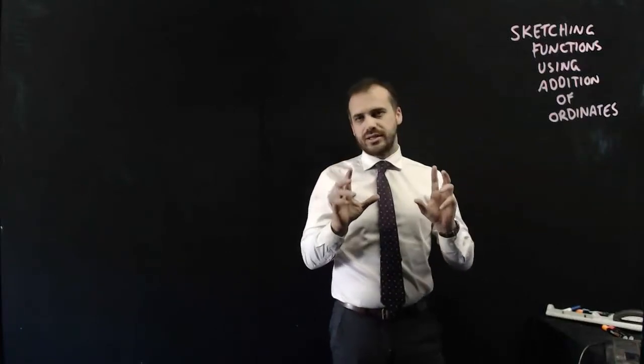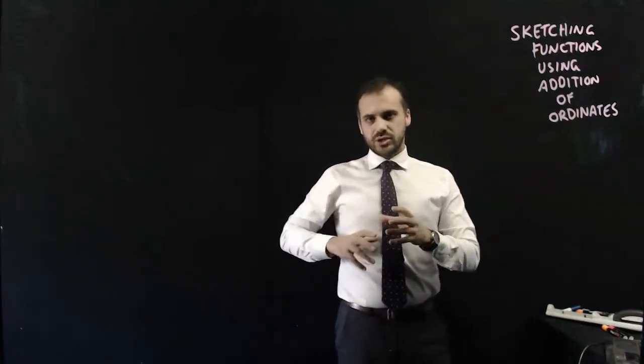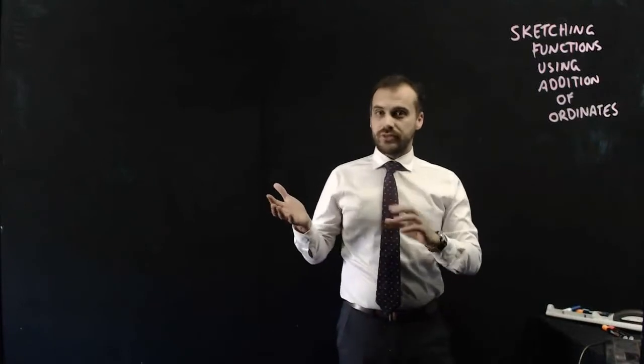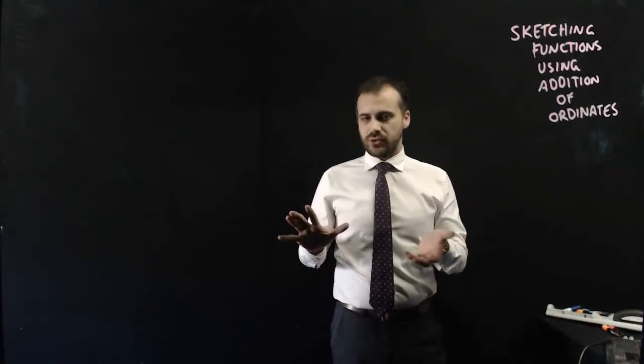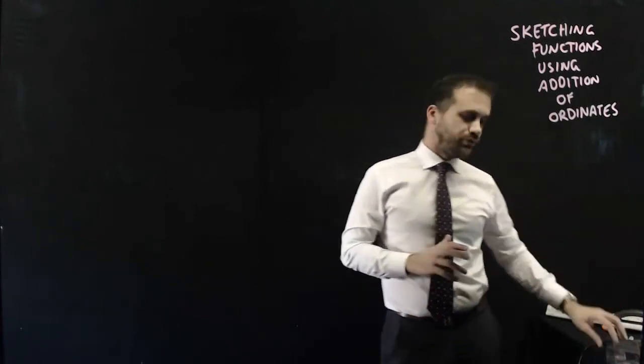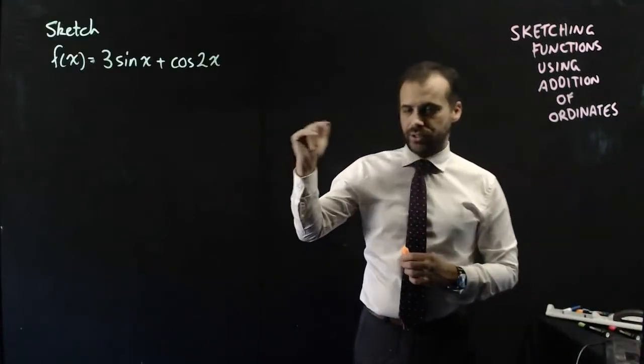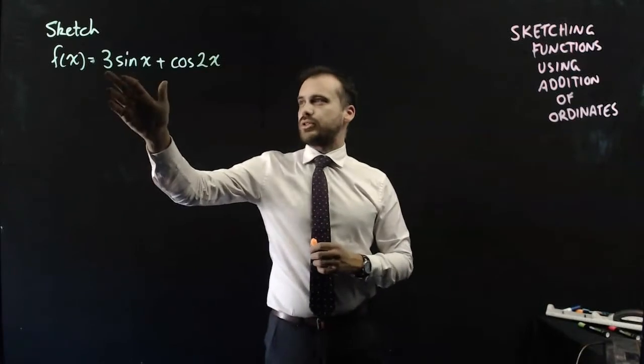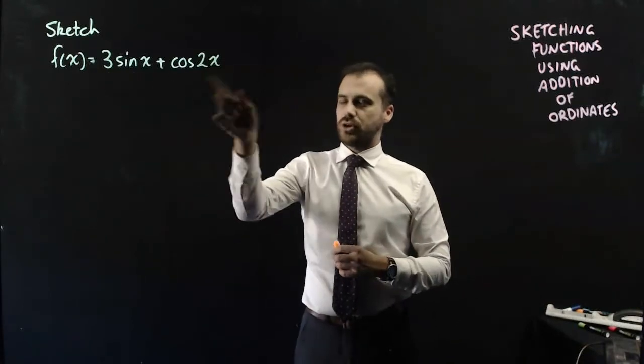So sketching functions using the addition of ordinates. I'm going to show you a weird looking function, something you've never really seen before, and I'm going to show you how to sketch it by using addition of ordinates. So here's our weird looking function: f(x) = 3sin(x) + cos(2x).